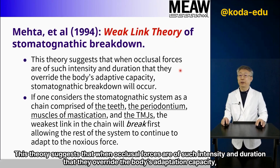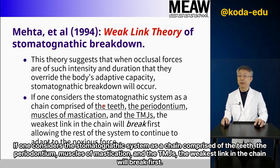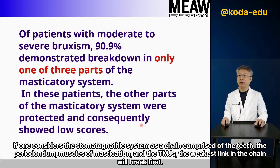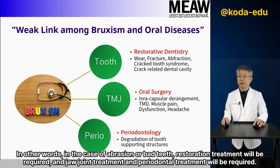The weak link theory suggests that when occlusal forces are of such intensity and duration that they override the body's adaptation capacity, stomatognathic breakdown will occur. If one considers the stomatognathic system as a chain comprised of the teeth, the periodontium, muscles of mastication, and the TMJ, the weakest link in the chain will break first. Therefore, it is important to strengthen the weak areas — in the case of abrasion or damaged teeth, restoration treatment will be required, and jaw joint treatment and periodontal treatment will also be required.